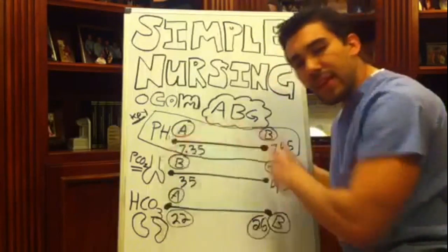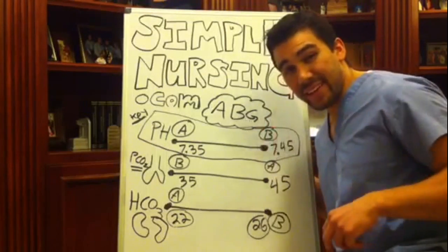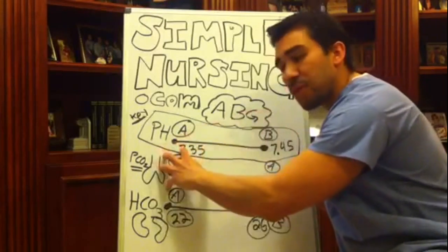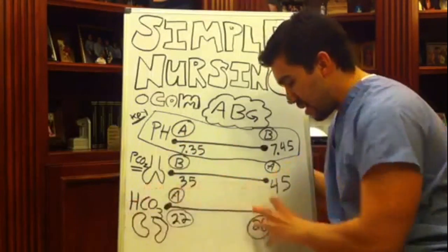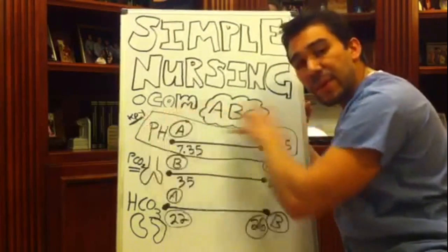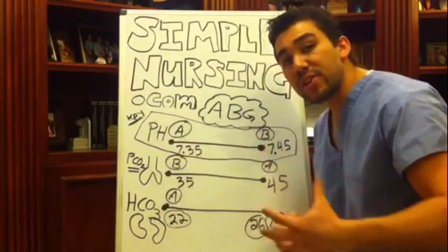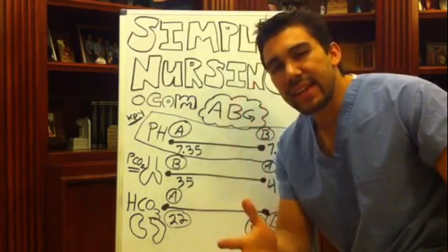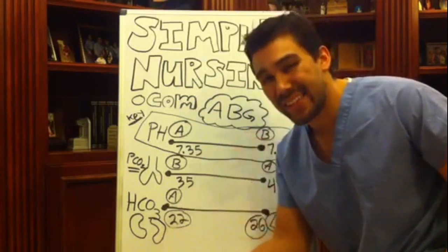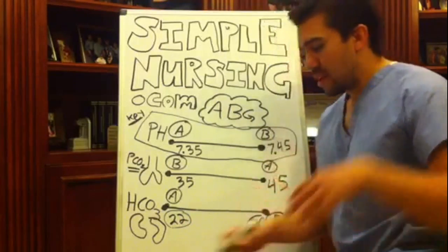On the other end, if we have 7.45 and above, it'll be basic alkalosis. We just have to match up for respiratory alkalosis or metabolic alkalosis. Our key up here, if we have a match down below, will help you pinpoint: is it alkalosis or is it acidotic? Is it base or is it acidotic?